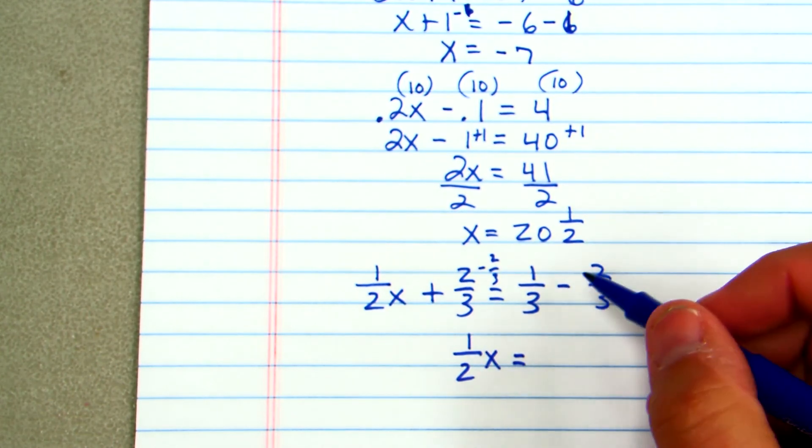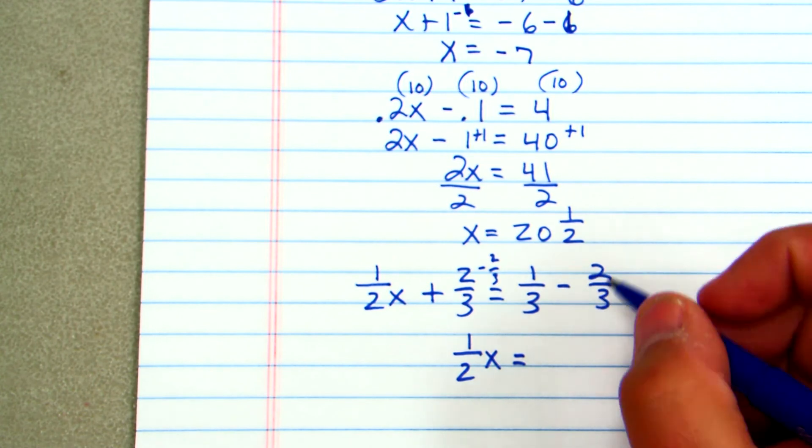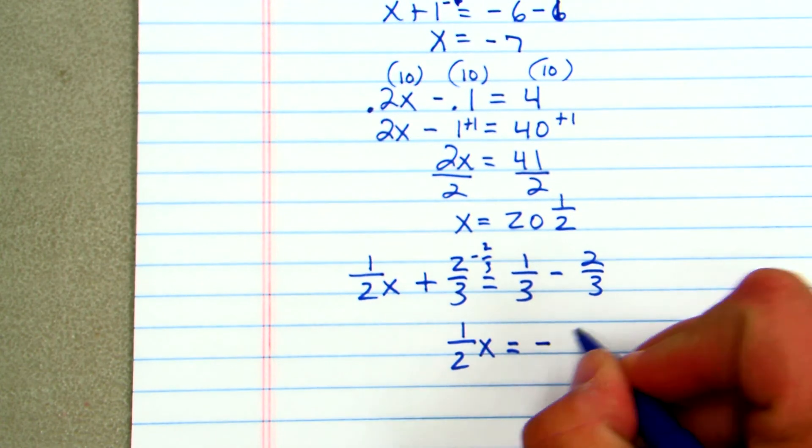Now when you're subtracting fractions or adding, you must make sure to have a common denominator. In this situation, we already do. So it will be 1 half x is equal to negative 1 third.